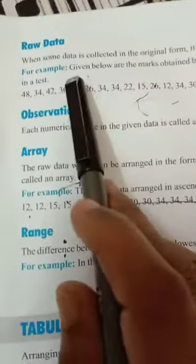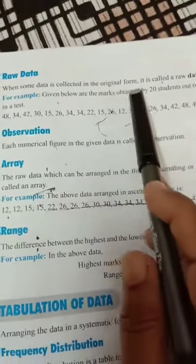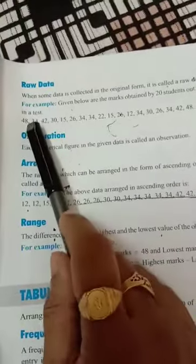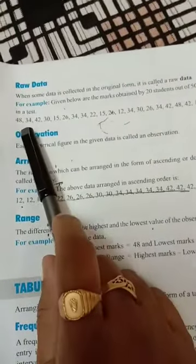Now, raw data. What is raw data? Raw data means when some data is collected in the original form, it is called raw data. That means we are collecting the information and writing it as it is.